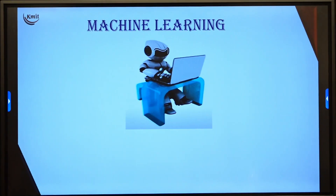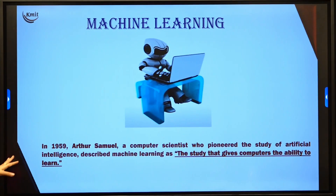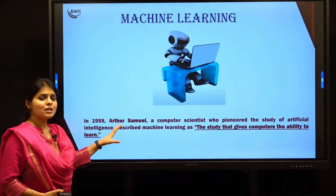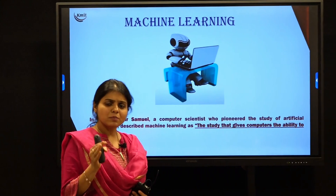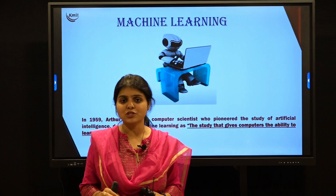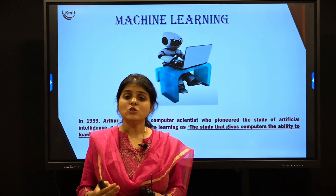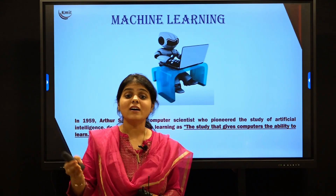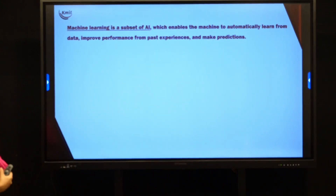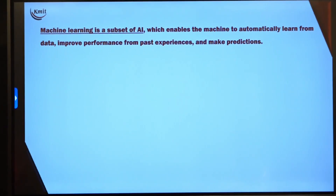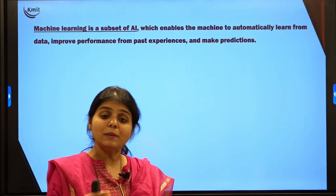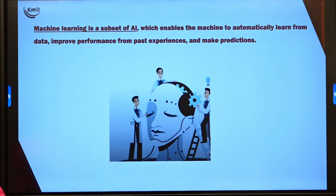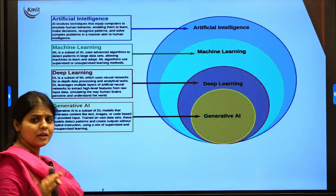The first definition of machine learning was framed in 1951 by computer science pioneer Arthur Samuel, who said machine learning is the study that gives computers the ability to learn. Initially, the machine was just given ability to learn, but that is not sufficient — similar to how humans learn, make mistakes, and correct them through experience. So the definition was updated: machine learning is a subset of AI which enables the machine to automatically learn from data, improve performance from past experiences, and make predictions.